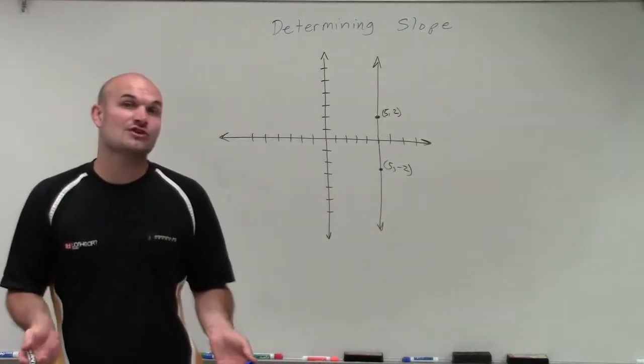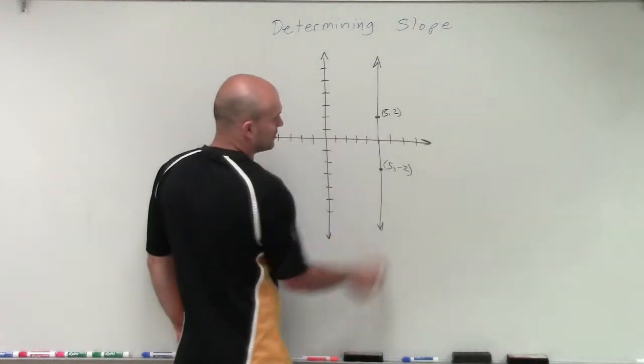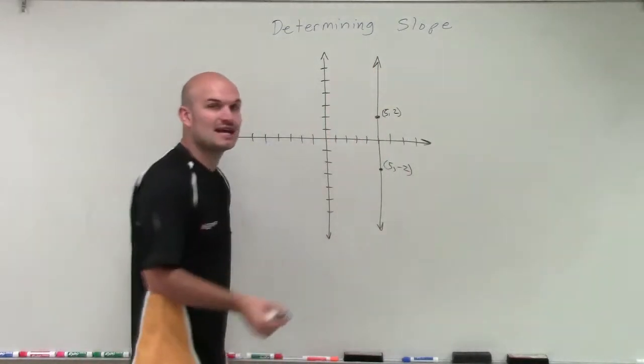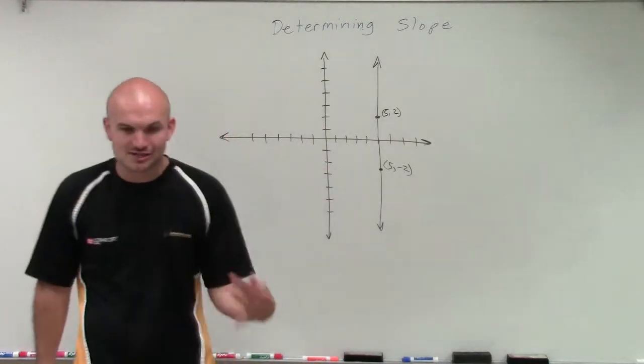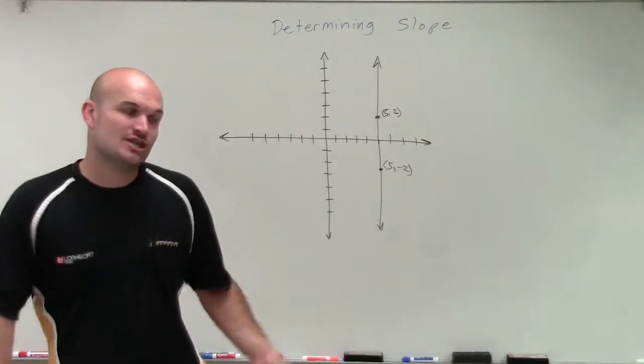So I said you can create a slope triangle by using horizontal lines and vertical lines, but we notice they lie on the same vertical line. And remember, when trying to determine the slope, we want to be able to determine what is the change in the y over the change in the x.